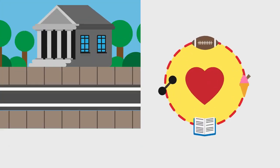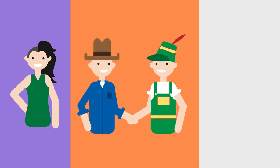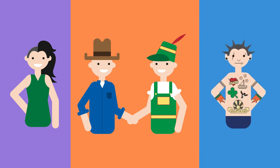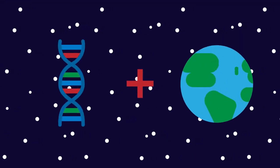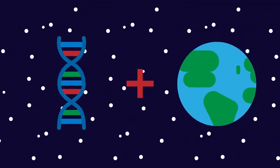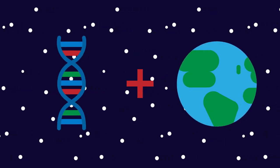Some variation is due to the environment or lifestyle of the organisms. Examples in humans are hair length — it depends on how short you decide to cut it — your accent, as this is linked to where you live, and if you have any piercings, tattoos, or scars. These are characteristics that you acquire throughout your life.